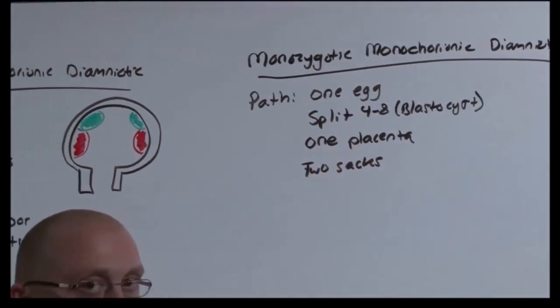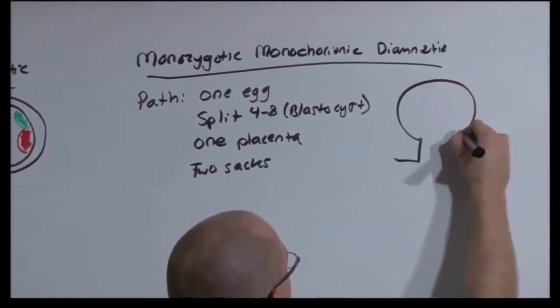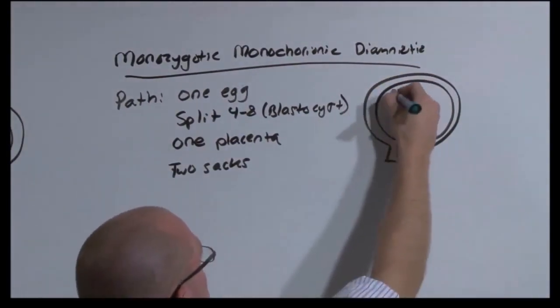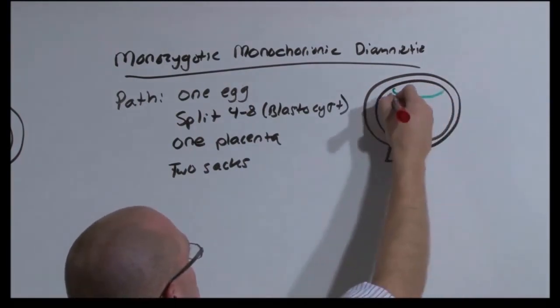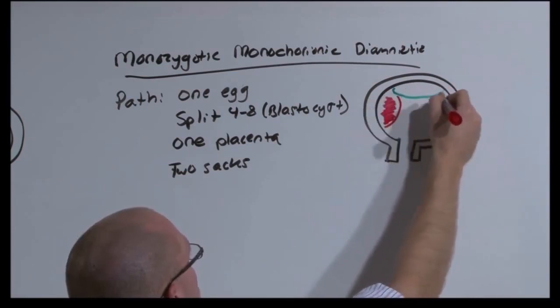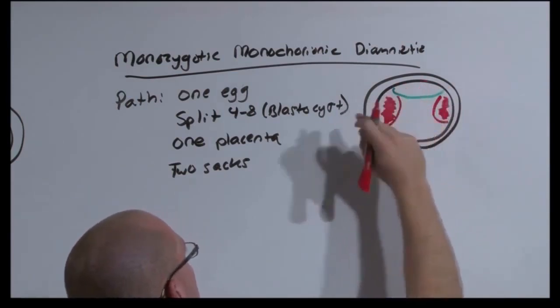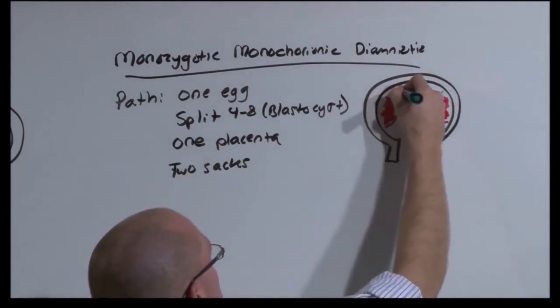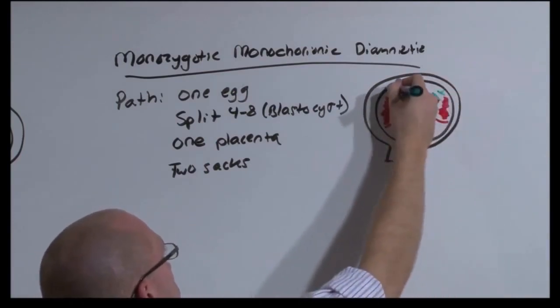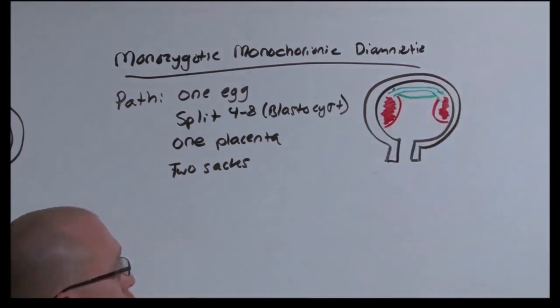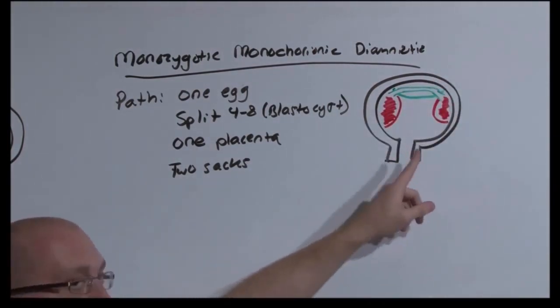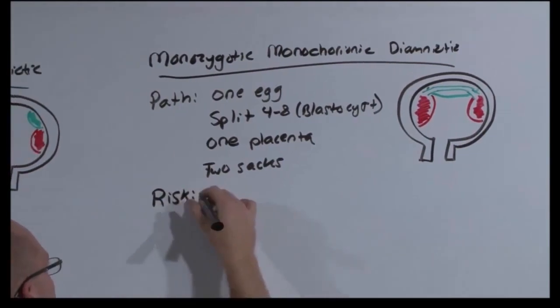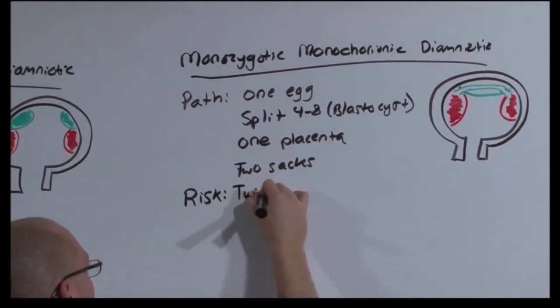Before we talk about the risk this confers, let's draw a picture of what that might look like. Here's the uterus. There is one placenta that feeds two sacs, each with their own developing fetus. But recognize that the blood supply for both is supplied by the same placenta. They're basically one long connection between the two of them. So it's possible for these twins to have a twin-twin transfusion. They have all of the risk of the previous twins above them, except that these twins are also at risk for twin-twin transfusion.